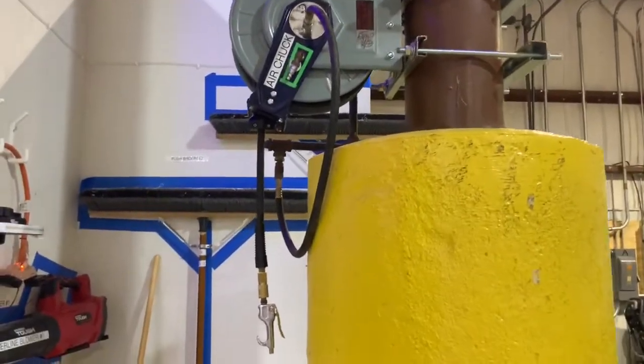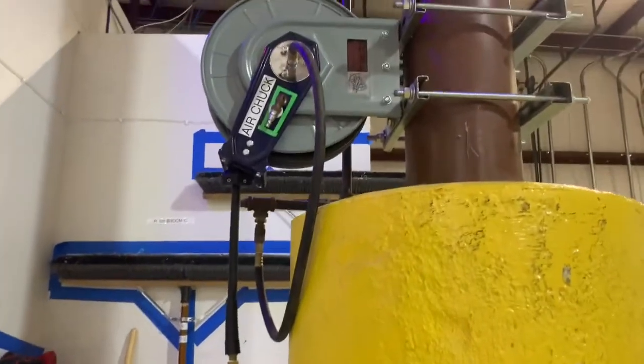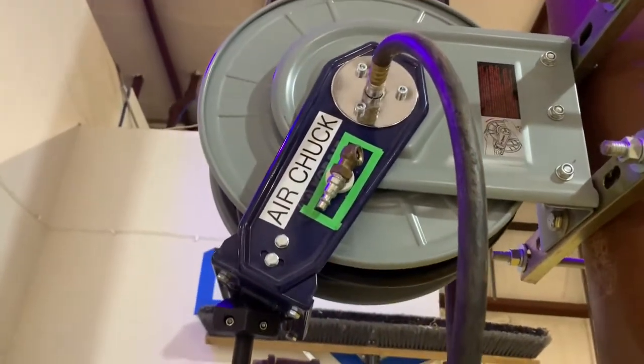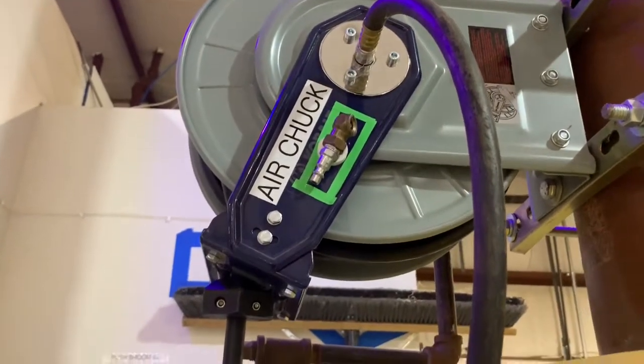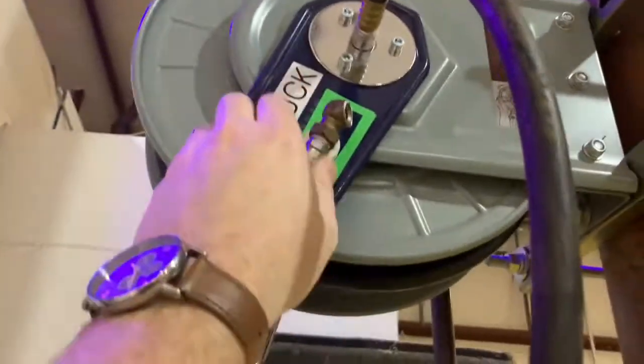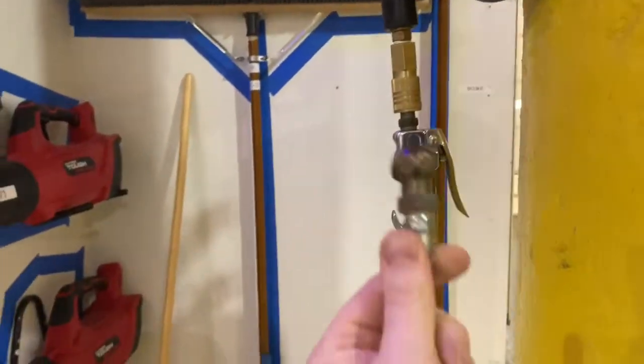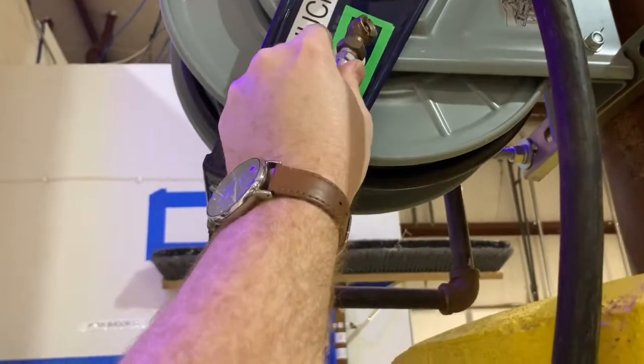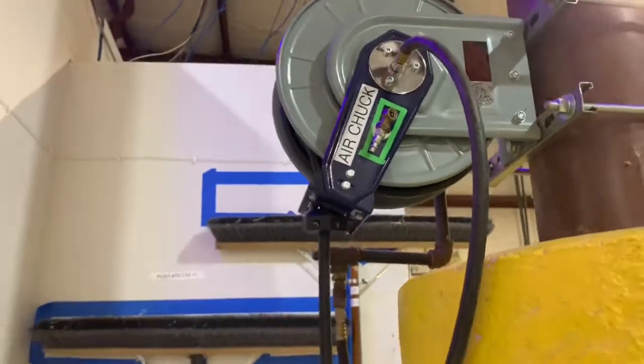All right, so here we go. Nicely labeled air chuck, got a shadow line so you know where to put it back, and it's just attached on there by a magnet. So you grab it, swap it out, use it, and put it back. Thanks for watching.